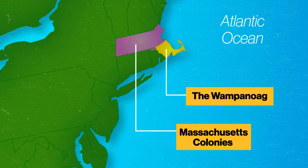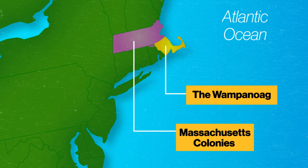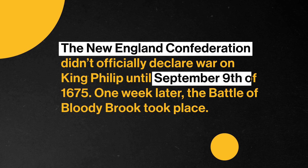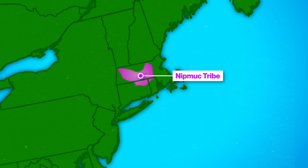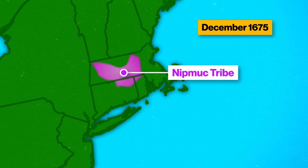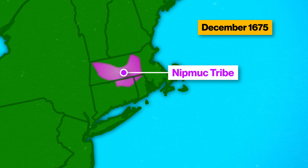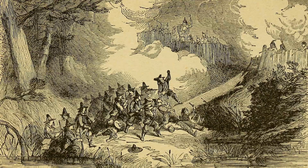By the end of June, the Wampanoag engaged in all-out war against the Massachusetts colonies. By midsummer, the Algonquian natives joined forces with the Wampanoag and continued raiding Plymouth settlements. The New England Confederation didn't officially declare war on King Philip until September 9th of 1675. One week later, the Battle of Bloody Brook took place, where the Nipmuc tribe attacked a wagon train of colonists escorted by a Confederacy company — almost no colonists survived. The Plymouth Colonial Militia responded that December by attacking a Wampanoag and Narragansett fortification at the Great Swamp in Rhode Island. Roughly 300 natives were killed, including women and children. Some were burnt at the stake while others were left to die from exposure. At this point, the Narragansett and their leader, Chief Canonchet, were pushed into the war.